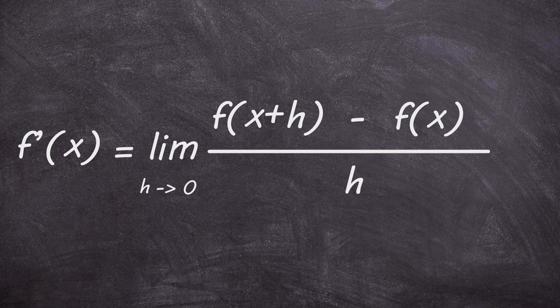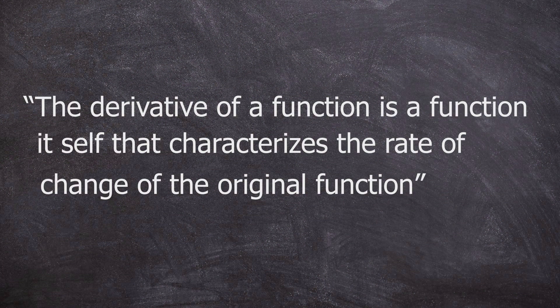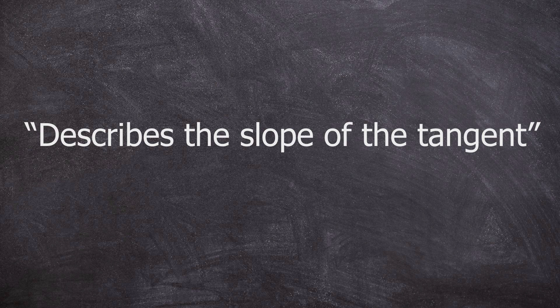So this equation has the LIM, which is the limit of the equation where H goes to 0. But why does the equation look like this, and why are we taking the limit in the first place? First of all, we need to look at the definition of a derivative. The derivative of a function is a function itself that characterizes the rate of change of the original function.